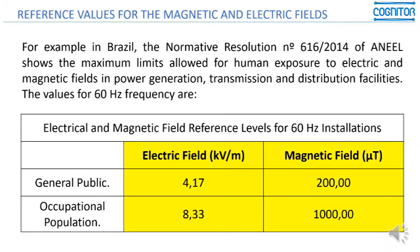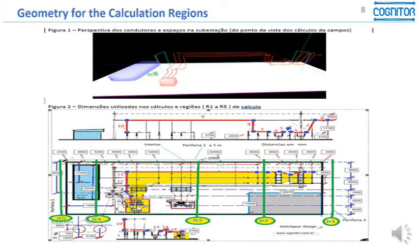When I say general public, I mean people different from substation operators, people which may be walking near the substation and are not skilled people related to electric power. For the magnetic fields, the values are 200 microteslas, and for the occupational population, the values are 1000 microteslas.